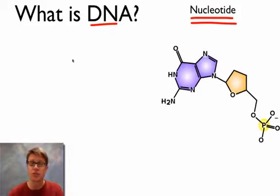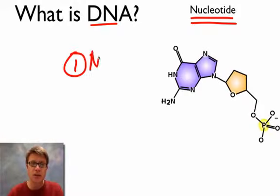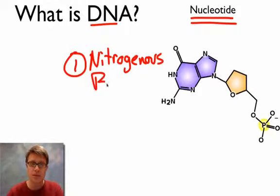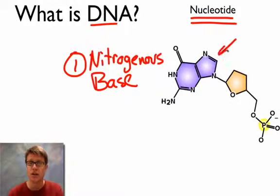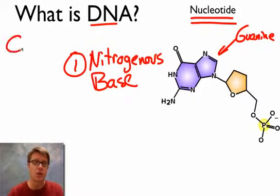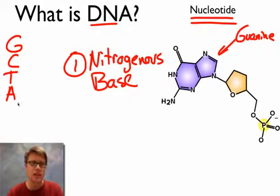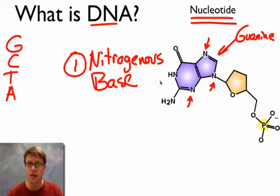A nucleotide has three parts to it. Part one is this nitrogenous base — in DNA there are four types of nitrogenous bases. This one pictured here is called guanine, but there are three others: guanine, cytosine, thymine, and adenine. When you see these letters in DNA, they're really referring to this nitrogenous base. It's called a nitrogenous base because of all the nitrogen found inside it.